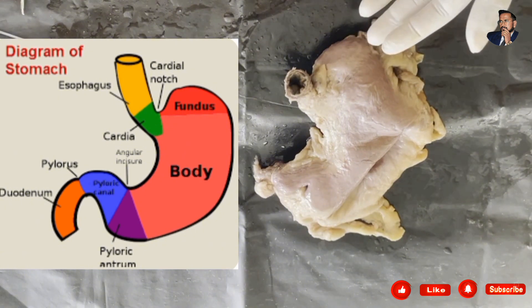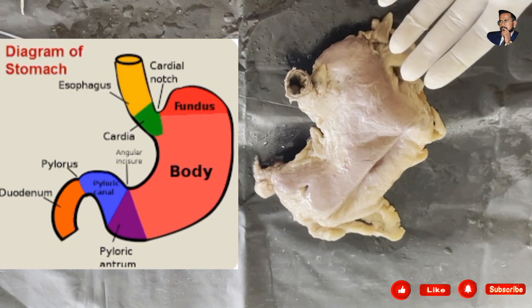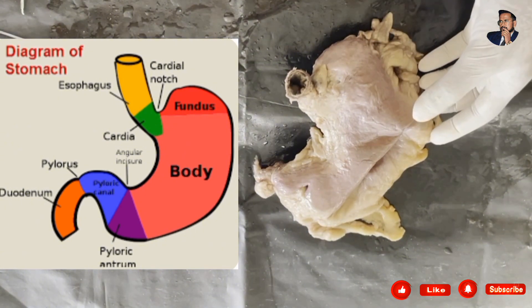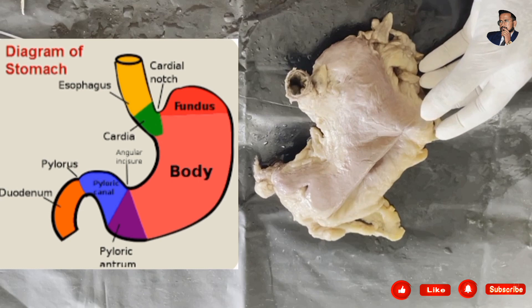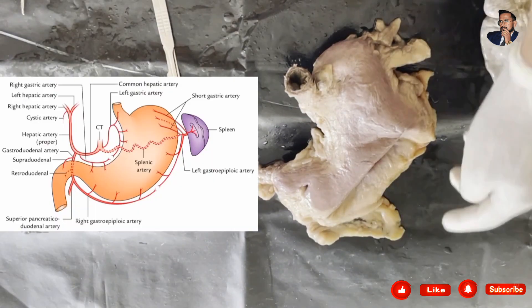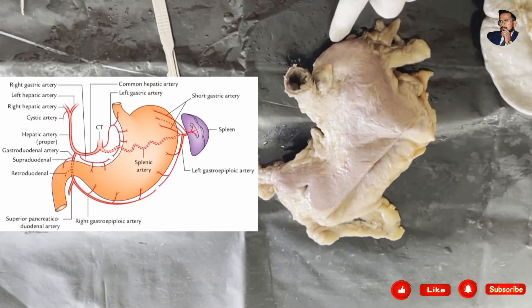The parts of the stomach consist of the fundus, body, and the pyloric part, which consists of the pyloric antrum and pyloric canal. From the cardiac notch, if you draw an imaginary line above, that dome-shaped region is the fundus.